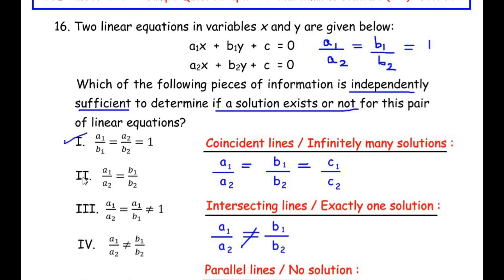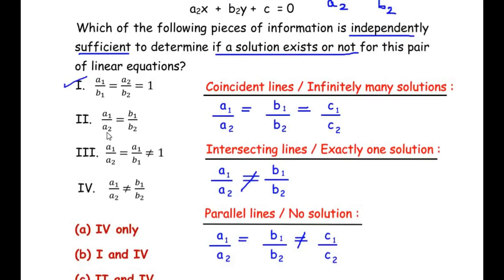Now let us look at the second given option: a₁/a₂ is equal to b₁/b₂. If we look at all the three conditions, we do not have any condition which represents this second given option, so the second is not our answer.